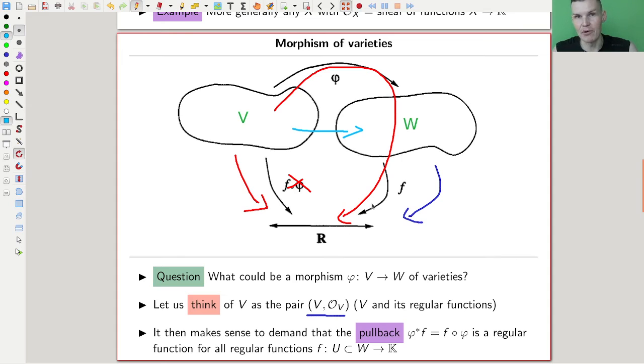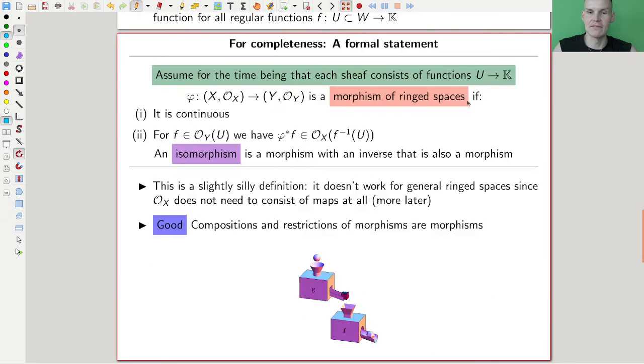And this is exactly what I do, and I pull it back to V, and I demand that this thing is a regular function, because we are looking at regular functions at the moment, right? To kind of make sense. And it's essentially the definition of a morphism between ringed spaces, or varieties, or whatever you want.